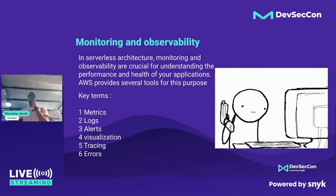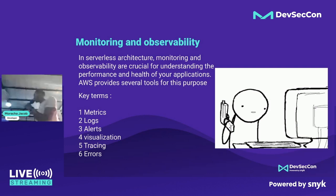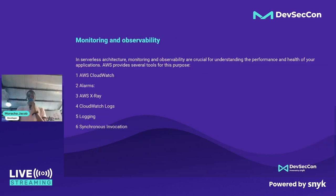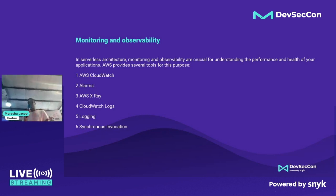If your application has a problem or a dependency issue, you can set up reports to notify you via email. AWS provides visualization through a dashboard for error reporting and monitoring. You can observe every single event in your application, trace where errors occurred, and debug them. Errors are essentially unexpected or abnormal behaviors within your applications. For serverless architectures, monitoring and observability are crucial for understanding the health of your application.